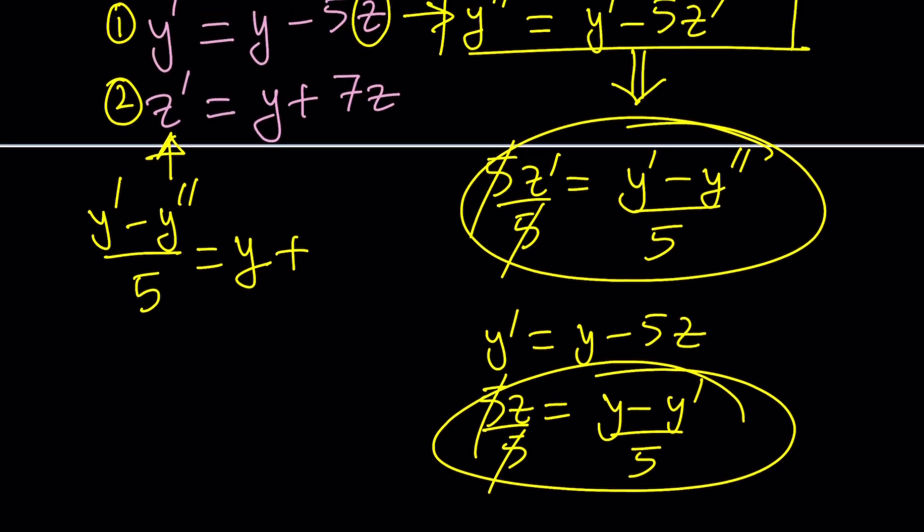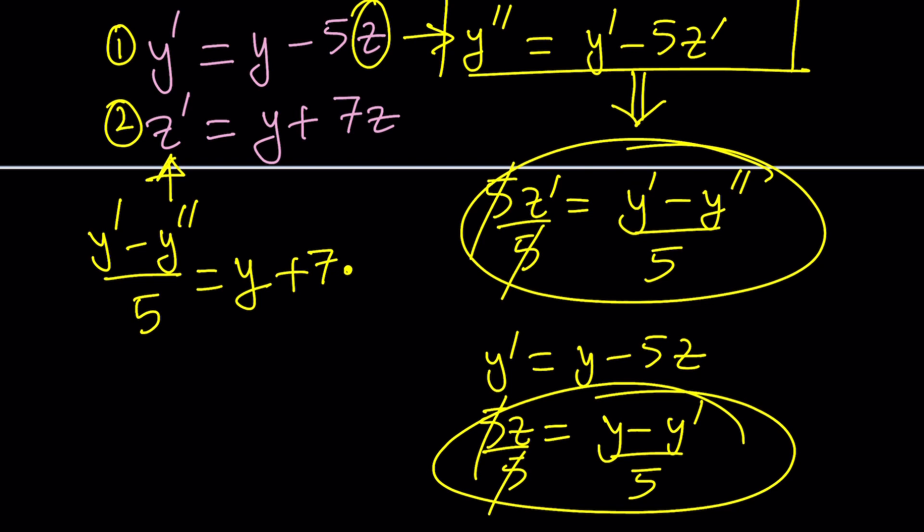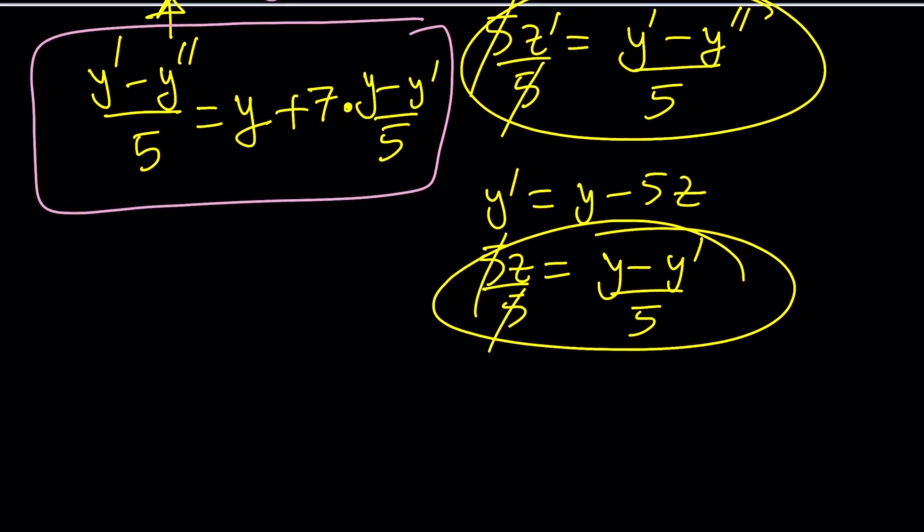So, let's go ahead and replace, because this is 7z. Replace z with that, y minus y prime divided by 5. And guess what? This equation is in terms of a single variable and that's y. Don't ask why, because that's what it is.